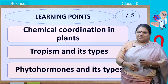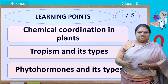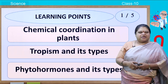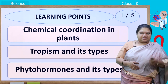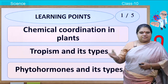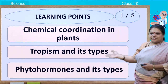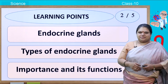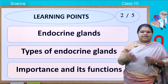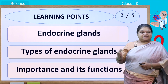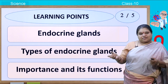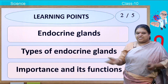Let us see what all we learnt till now. In the first session we studied about chemical coordination in plants, tropism and its types. We also studied about phytohormones and its types. In the second session we studied about endocrine glands, types of endocrine glands, its importance and also its functions.